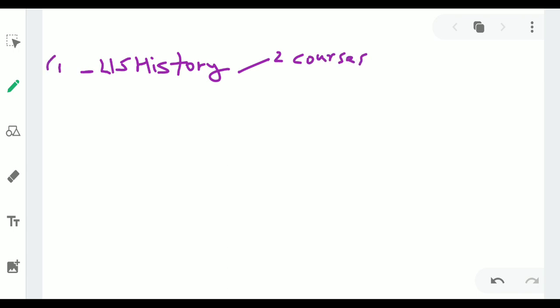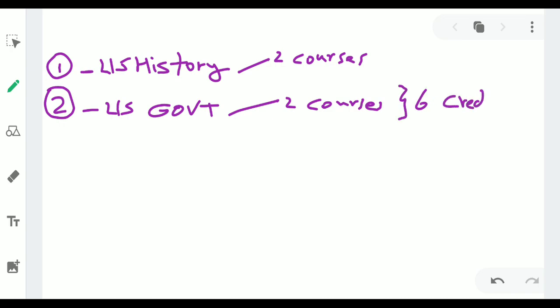And then the second subject matter is U.S. government. If you live in U.S.A., you have to take that course. U.S. government. This was also two courses, one and two, so two semesters, three hours each. So this one was six credit hours, and this one was six credit hours as well.